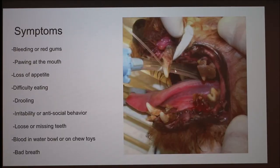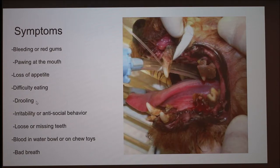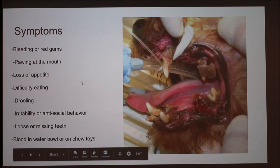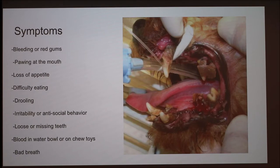Symptoms of periodontal disease include bleeding or red gums, pawing at the mouth indicating discomfort, lack of appetite — meaning it's probably too painful to eat — difficulty eating, excessive drooling, irritability or antisocial behavior. Just like us when we're sick, dogs can become irritable. Other symptoms include loose or missing teeth, which you might find in their food bowl, blood in the water bowl or on chew toys, and bad breath. Bad breath is usually what brings owners to the vet.